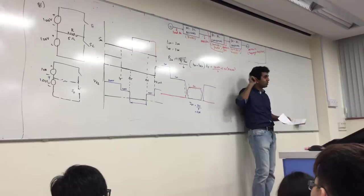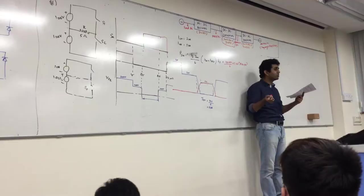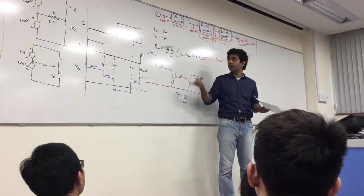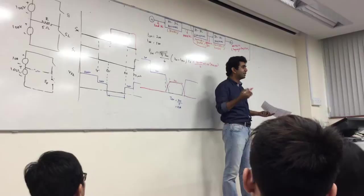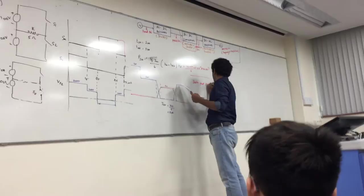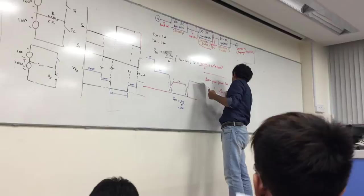Next is instantaneous power loss in each switch. You know that already — it's just VS divided by 2, times the current divided by 2. So I have 15 to 10. Instantaneous power loss is 500 watts. So instantaneous power loss is just VS over 2 times I_on over 2.